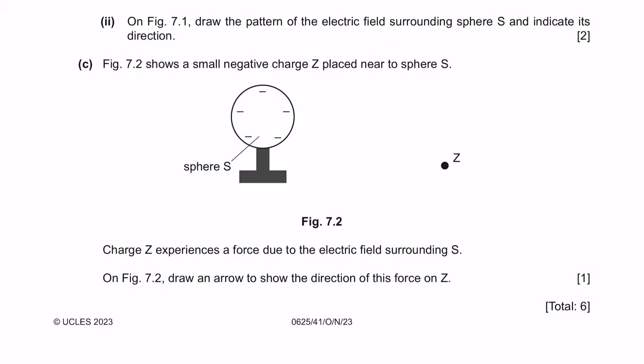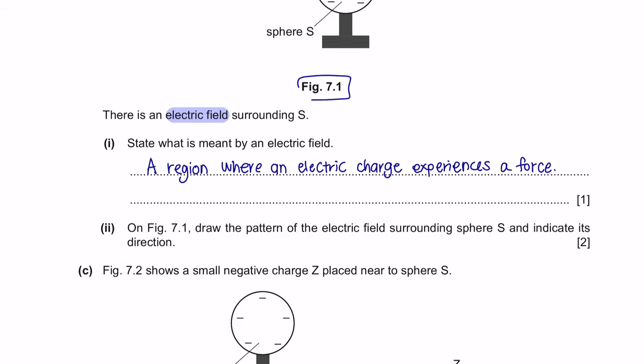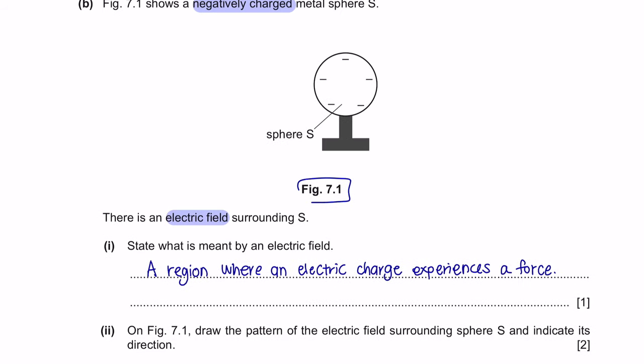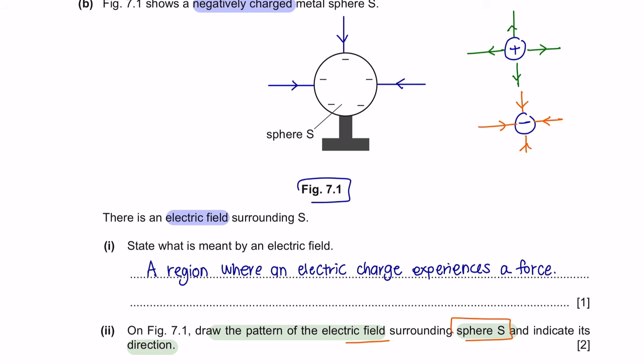Part 2: On figure 7.1, draw the pattern of the electric field surrounding sphere S and indicate its direction. The electric field for positive charges is always directed away from the charge, and the electric field for negative charges is directed inwards. So the pattern of the electric field surrounding sphere S, which is a negative charge, will look like arrows pointing inward toward the sphere.